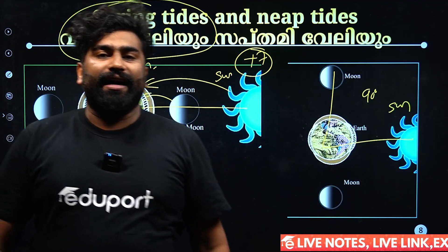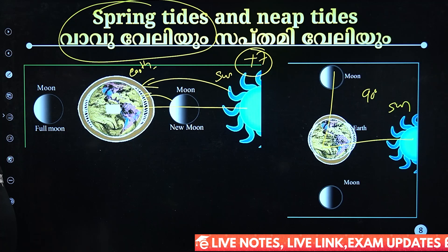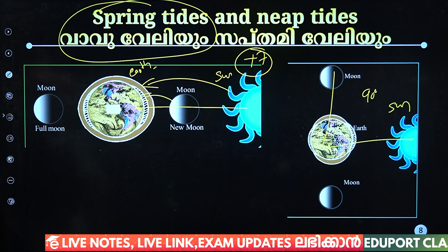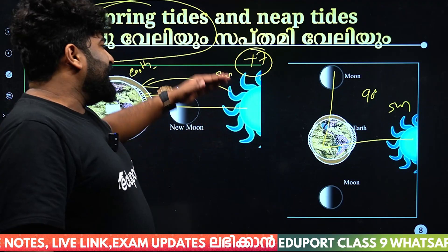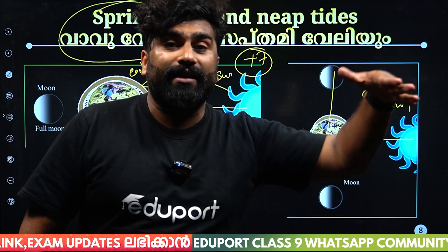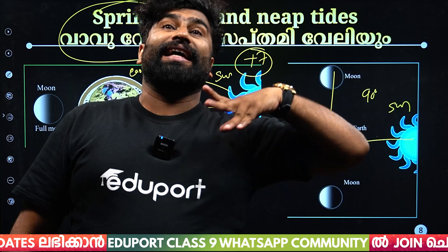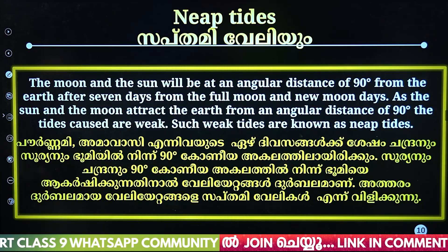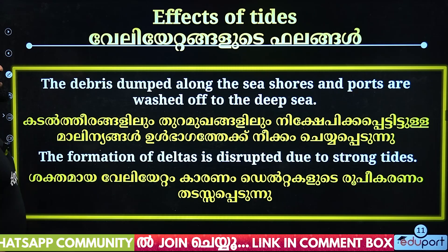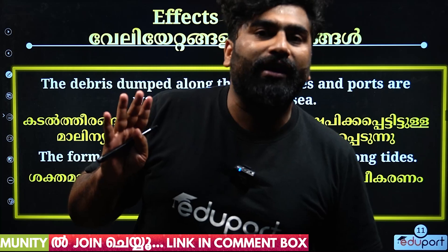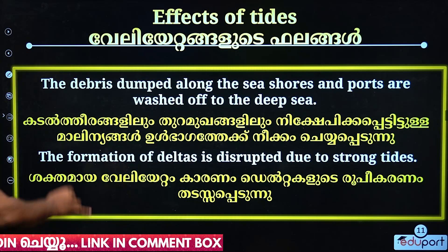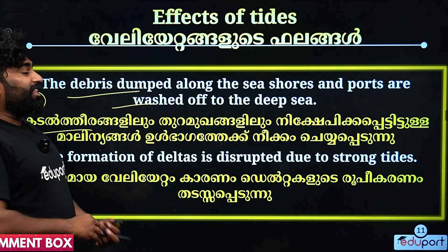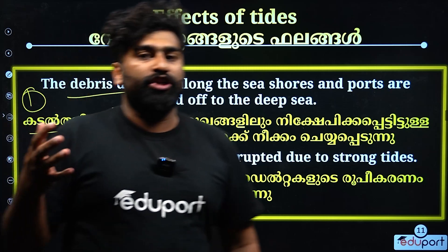The name is neap tide. After 7 days of the full moon and new moon days — after the spring tide — the neap tide occurs.